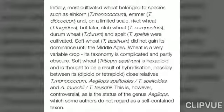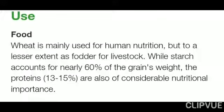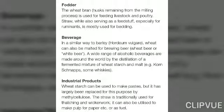Soft wheat (Triticum aestivum) is a hexaploid where 2n = 6x = 42. Wheat is mainly used for human nutrition but to a lesser extent as fodder for livestock. Starch accounts for nearly 60 percent of the wheat grain and protein is 13 to 15 percent, which is considered of nutritional importance. Wheat is also used for fodder, forage, and industrial products.